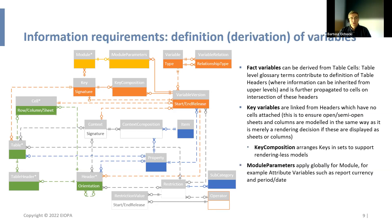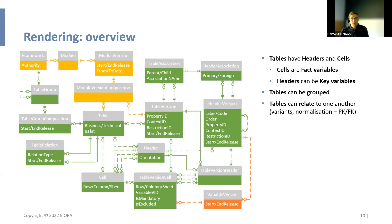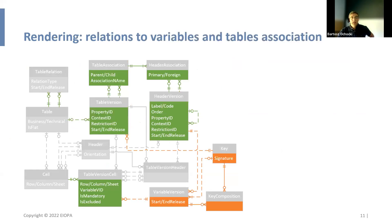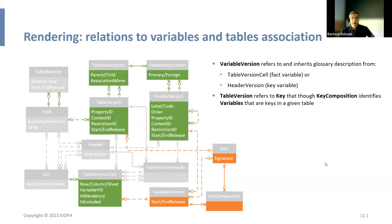Variables can also be assigned at the module level — these are things global for the entire report. The rendering has not changed much overall; we still have tables, headers, and cells. Tables can be grouped and related to one another. Variables are derived either from table cells or table headers, depending on whether they are key or fact variables.